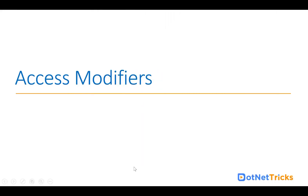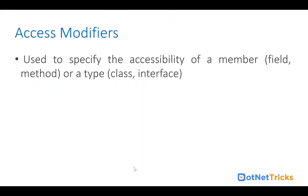Let's start with access modifiers. Access modifiers in C# are used to specify the accessibility of a member, like fields and methods in a class, or in an interface. They also specify the accessibility of a type as well, like a class or interface.